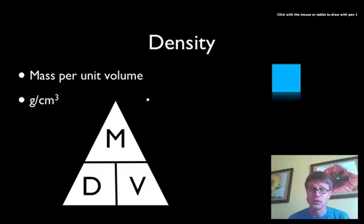So another thing you could do is let's say I'm given the density but I want to find the mass. That mass is simply going to be the density times the volume. Or if we want to find the volume, I cover that up and that's going to be mass divided by the density.